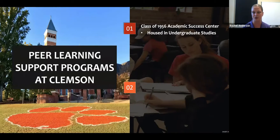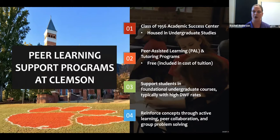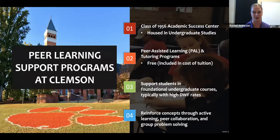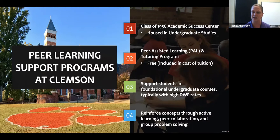I'm going to talk a little bit more specifically about Clemson University and how we have this set up. Our Class of 1956 Academic Success Center was endowed by that class, and it's currently housed underneath undergraduate studies. So we have part of our budget coming from undergraduate studies at the university level, but we also have some endowments we use to fund the center's programs. We have two main peer learning support programs: one is Peer Assisted Learning, or PAL — very similar to supplemental instruction — and we also have tutoring. Both of these programs are offered for a large number of courses on Clemson's campus and they're offered for free to students — it's included in the cost of their tuition. PAL alone supports about 16 different courses on campus.